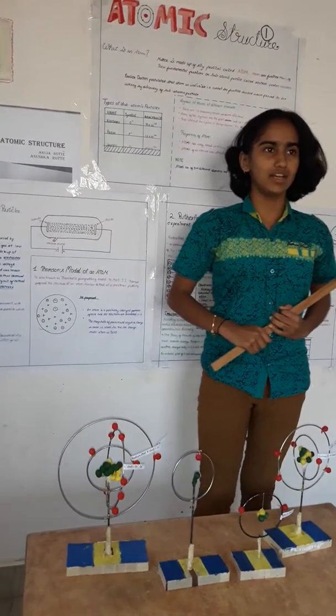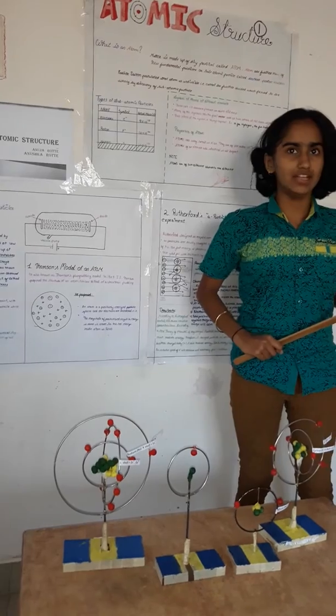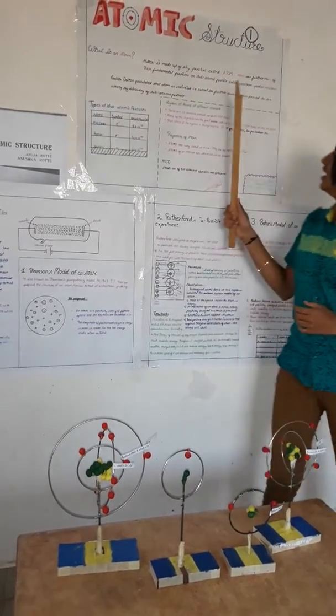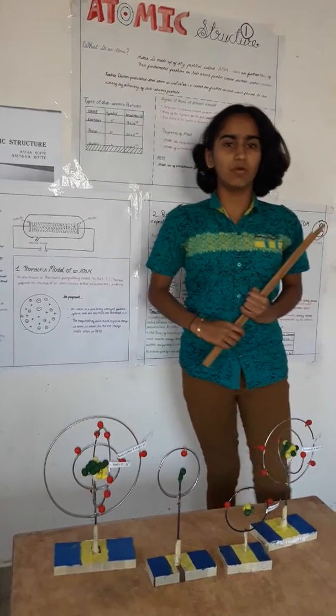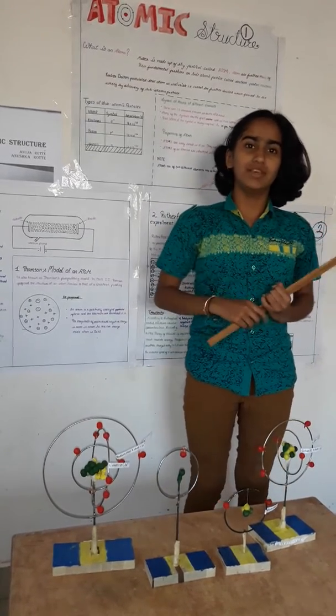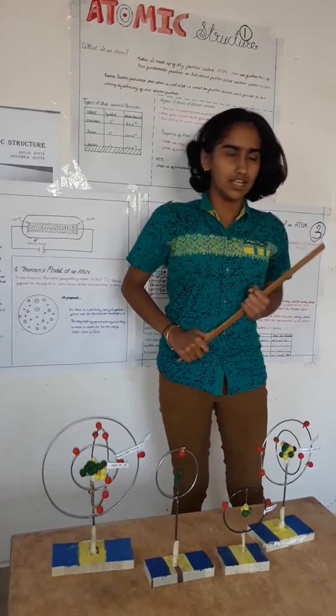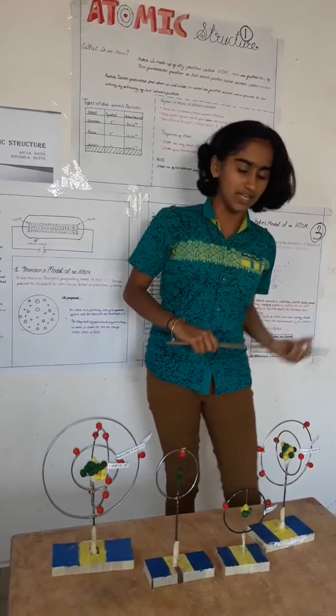What is meant by atoms? Matter is made up of tiny particles called atoms. Atoms are further made up of three fundamental particles called electron, proton and neutron. Earlier, Dalton postulated that atom is indivisible, that cannot be further divided, which proved to be wrong by discovery of fundamental particles.